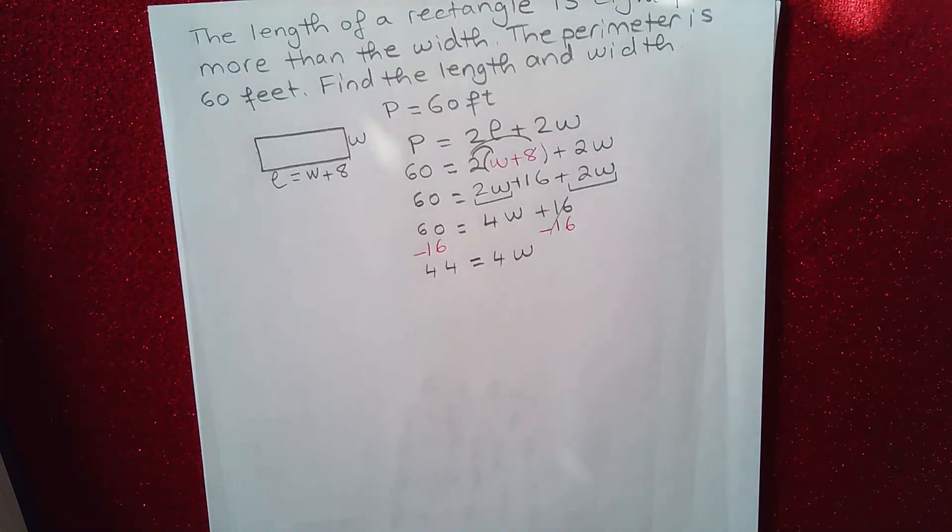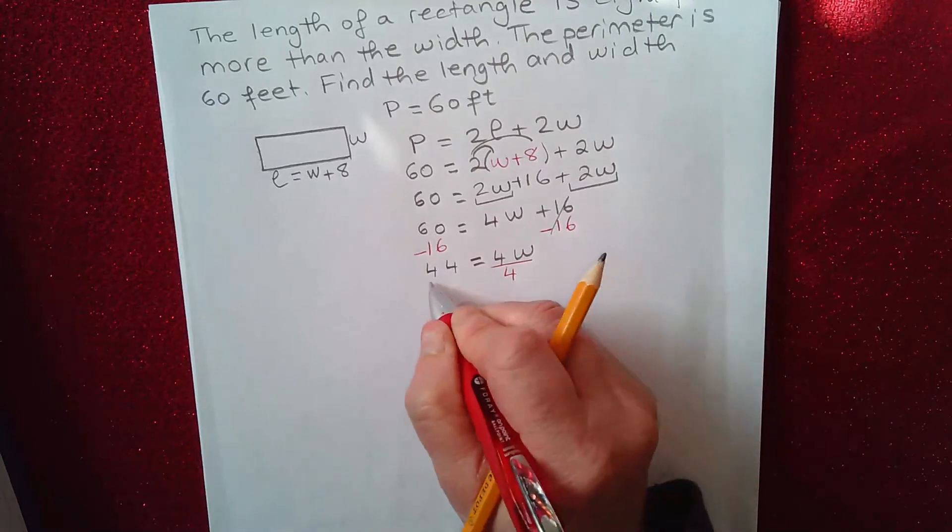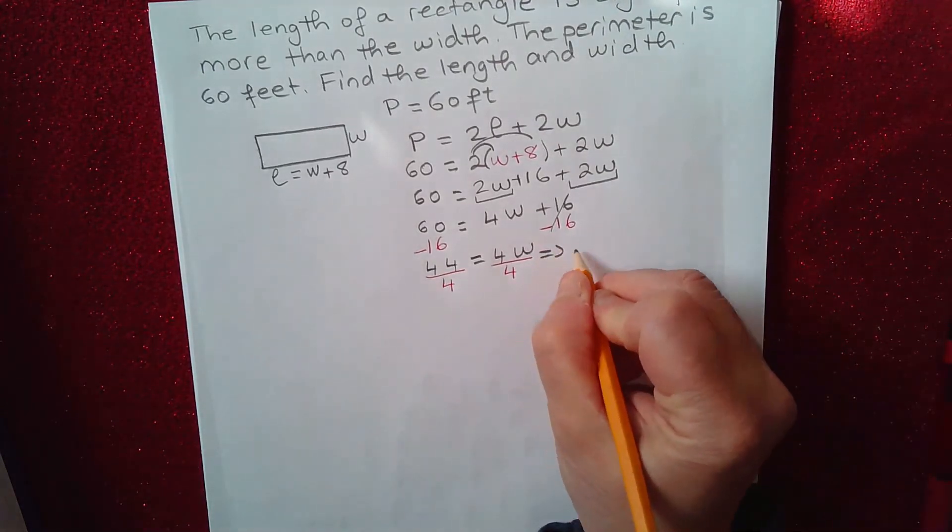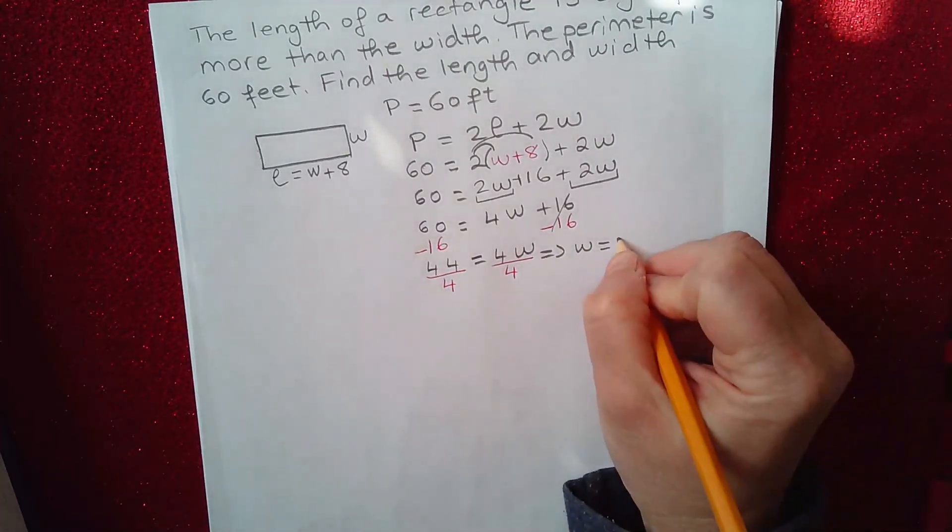And now we divide both sides of the equation by the coefficient of W. So we divide this by four. And that gives me W equals 44 divided by four. That's 11.